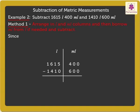Since 400 millilitres is lesser than 600 millilitres, we borrow 1 litre, that is 1000 millilitres, from 1615 litres.